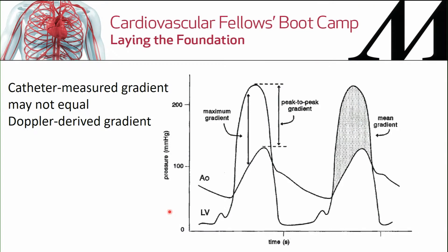The measurements made in the cath lab use high-fidelity catheters to directly measure pressure, whereas the gradient we get in the echo lab is based on the peak instantaneous gradient. These events occur at different points in the cardiac cycle and are affected by different physical laws, so very frequently there is not complete agreement between the two measurements, which can lead to confusion in determining the degree of stenosis.